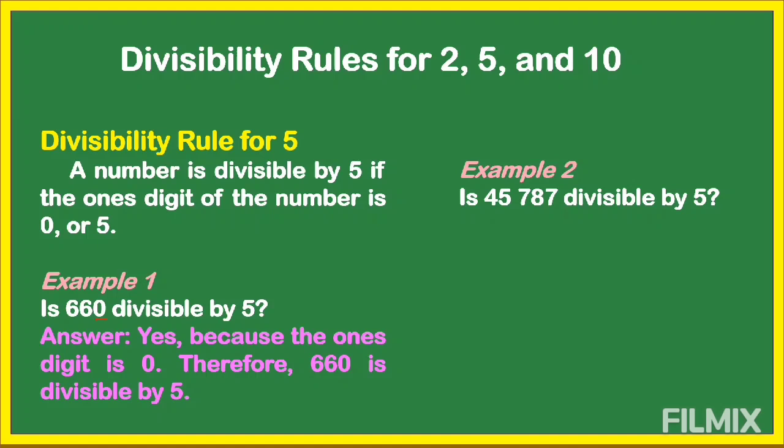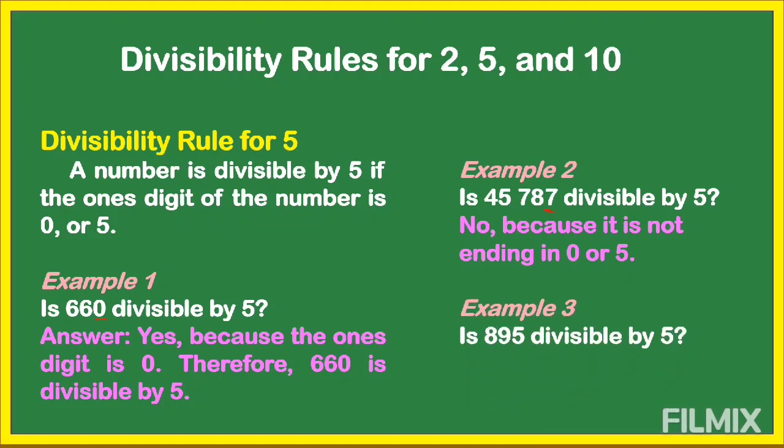45,787 is not divisible by 5 because it is not ending in 0 or 5 — it ends with 7. Another example: is 895 divisible by 5? A big yes, because it ends with 5. That's how we know whether a number is divisible by 5 or not.